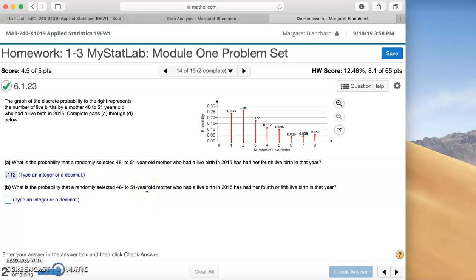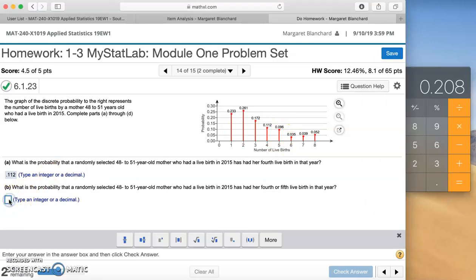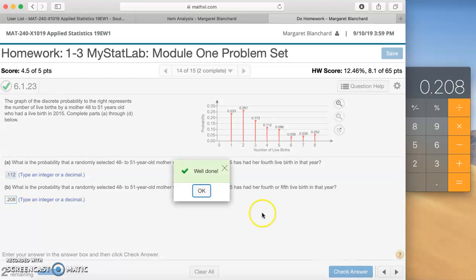What is the probability that a randomly selected 48 to 51 year old mother who had a live birth in 2015 has had her fourth or fifth live birth in that year? When it's an or like that, fourth or fifth, you add those two probabilities together. We would add 0.112 and the probability of five, 0.096, and that gives us 0.208. Well done.